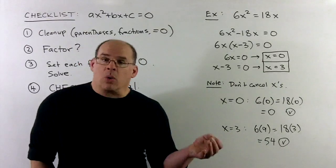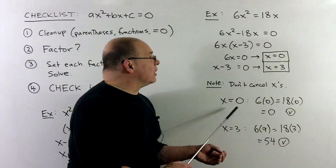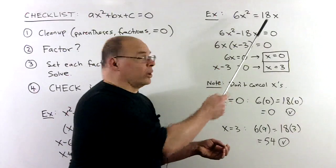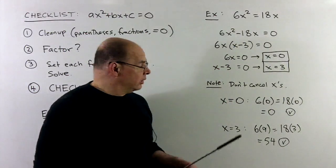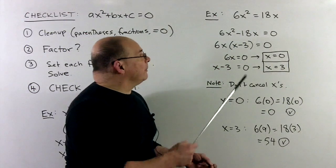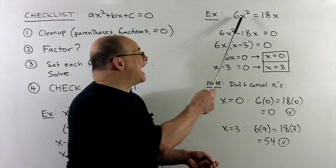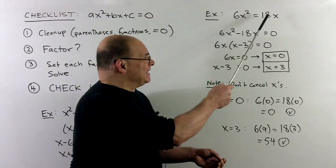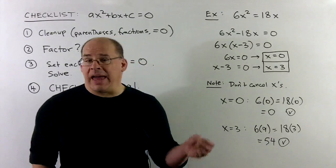We check our work. For x equals zero, we go back to the original, we get zero equals zero. So that's good. For x equals 3, we have 6 times 9, which is 54. 18 times 3 is 54. And that checks out also.